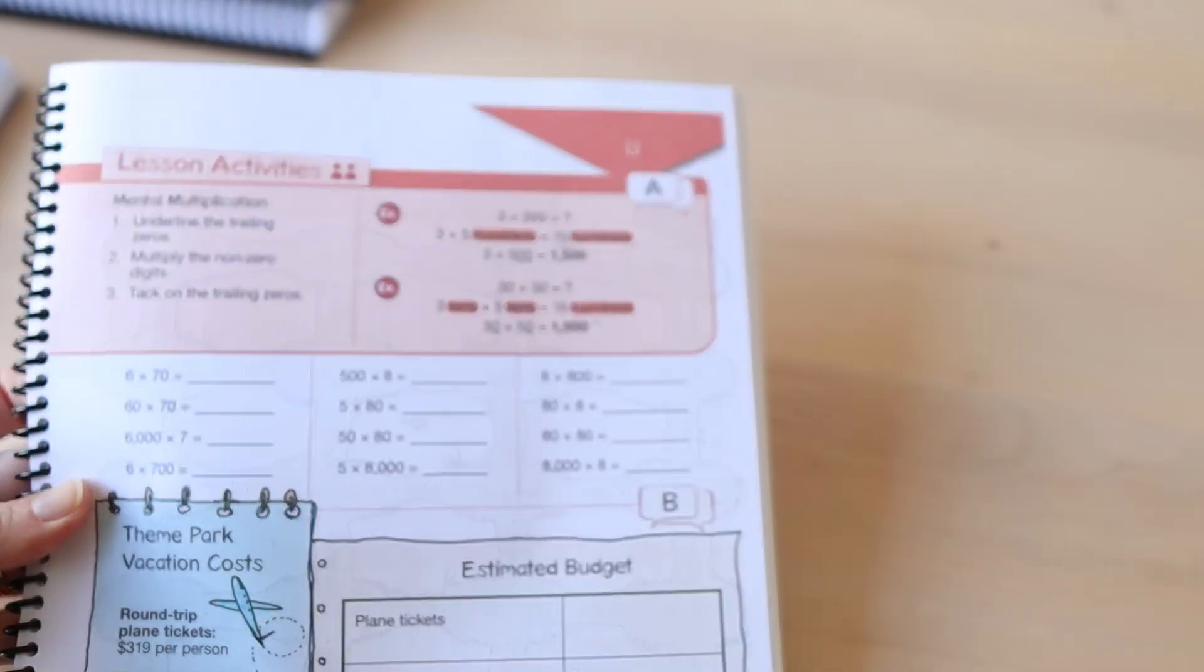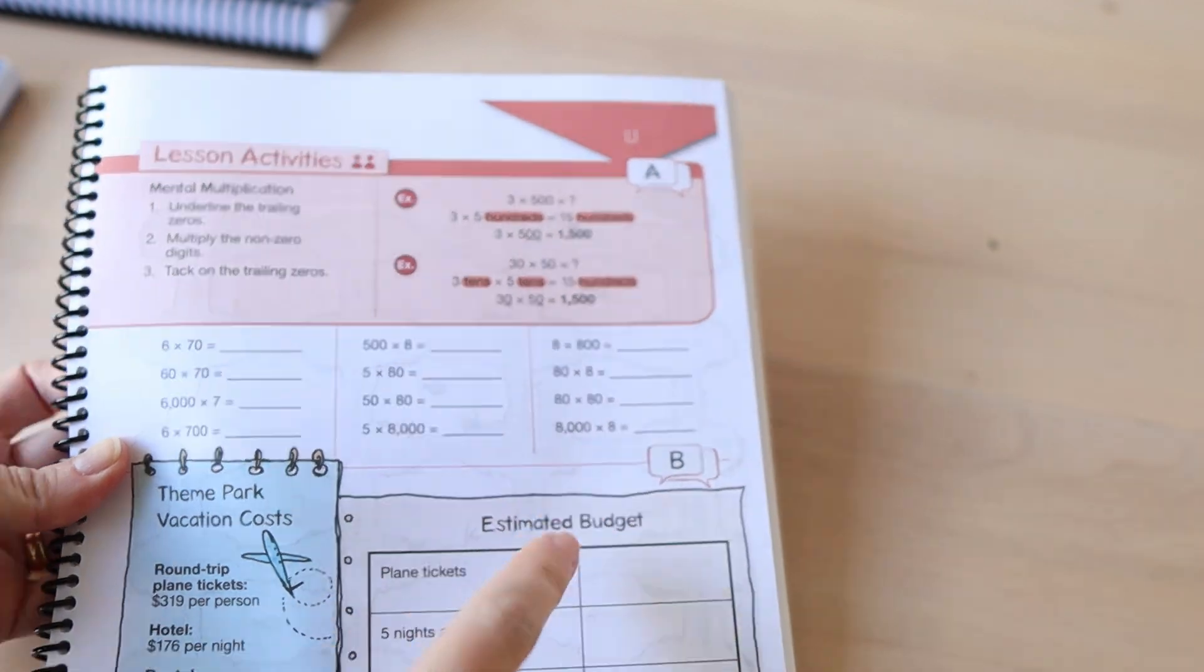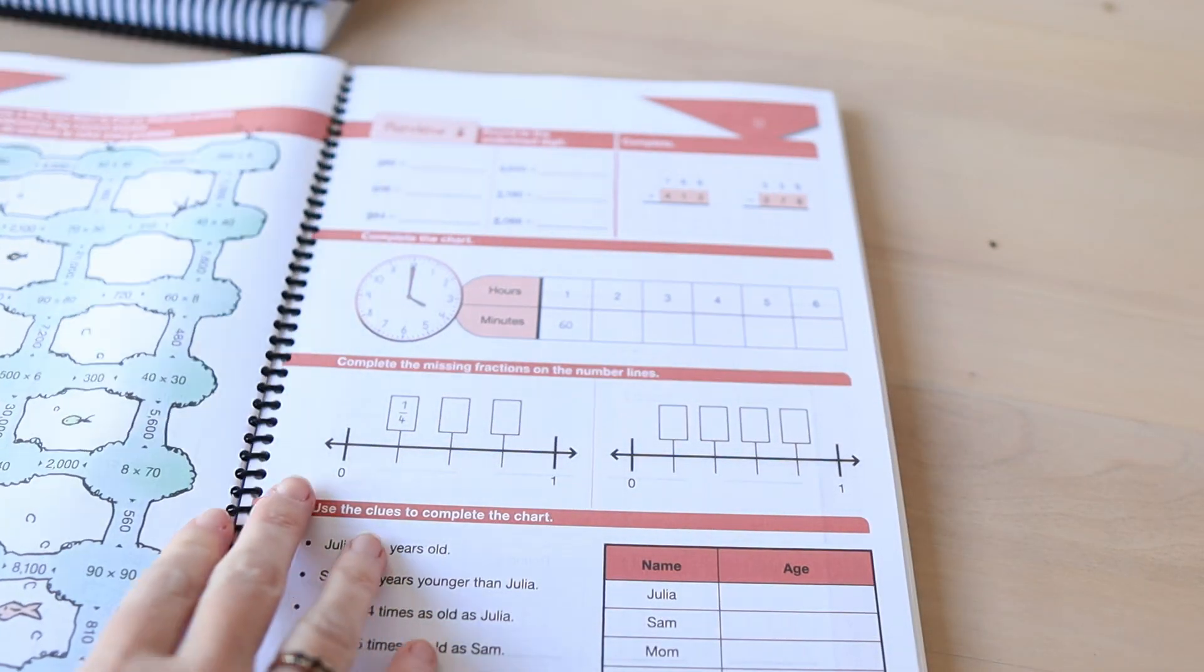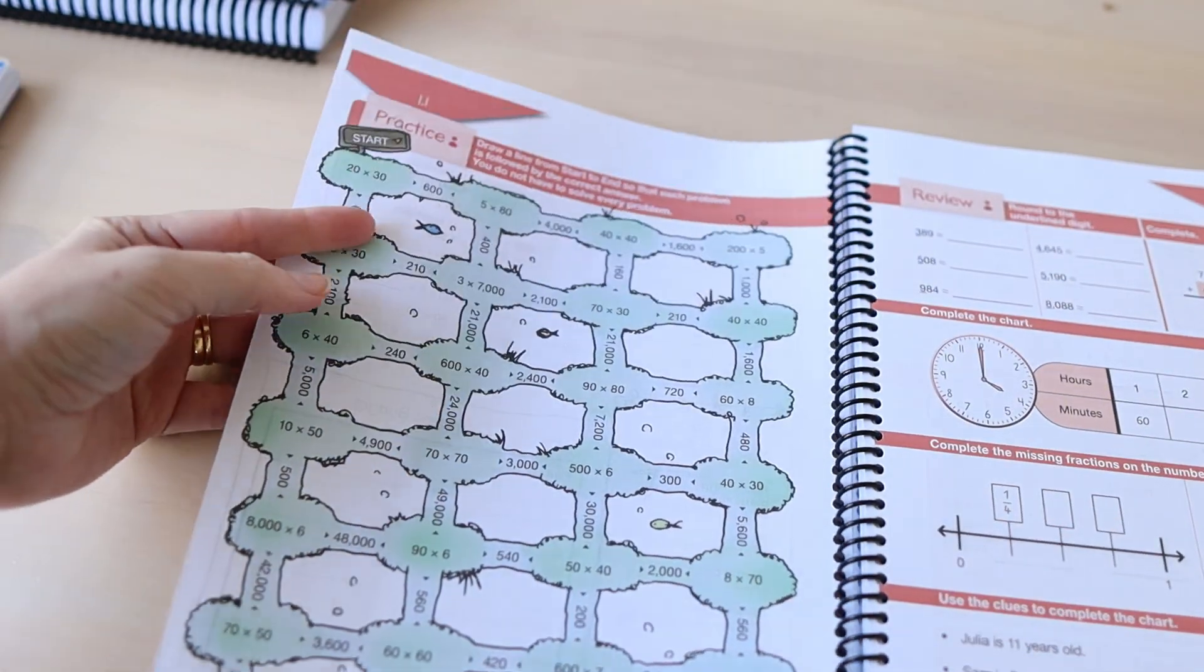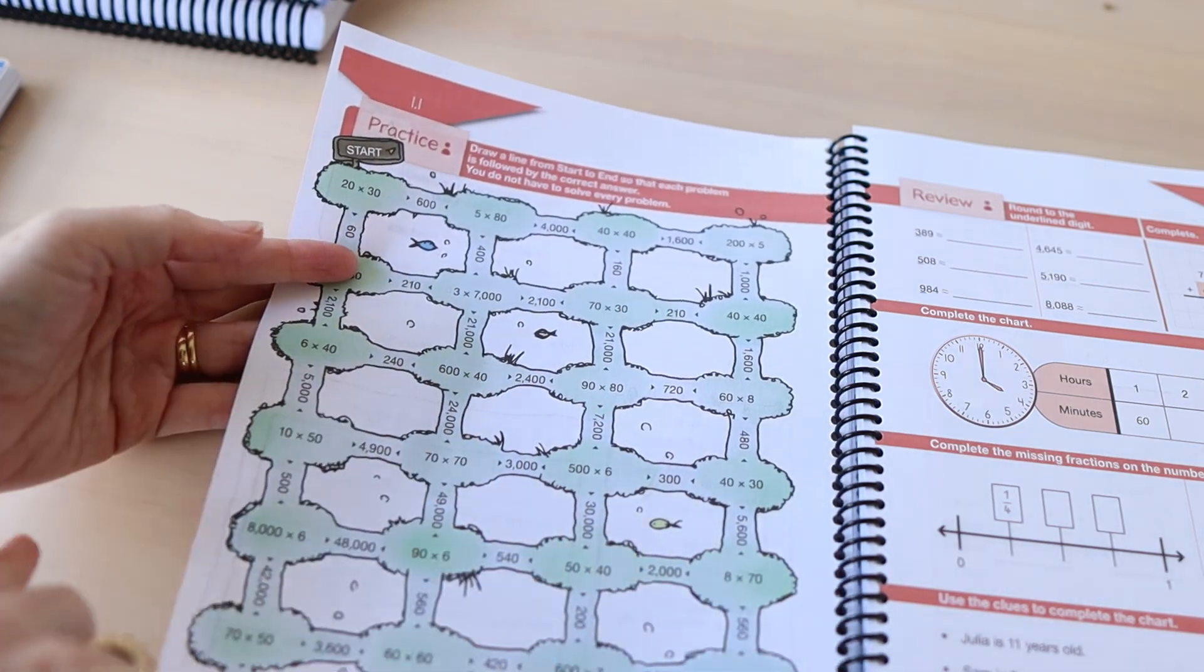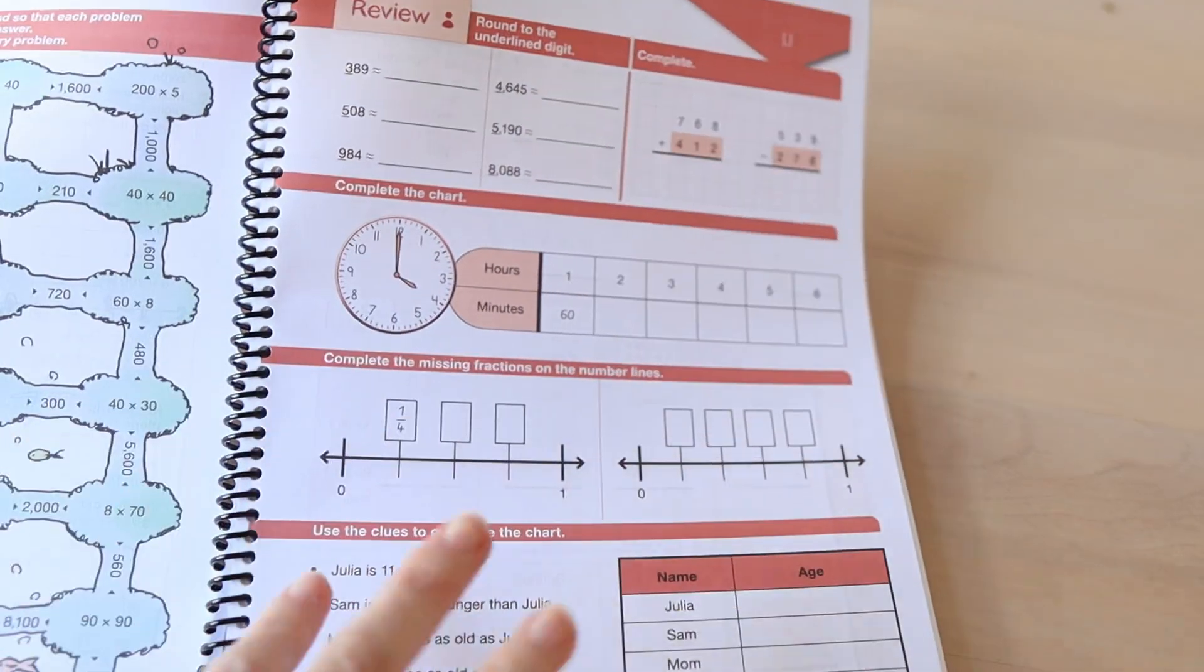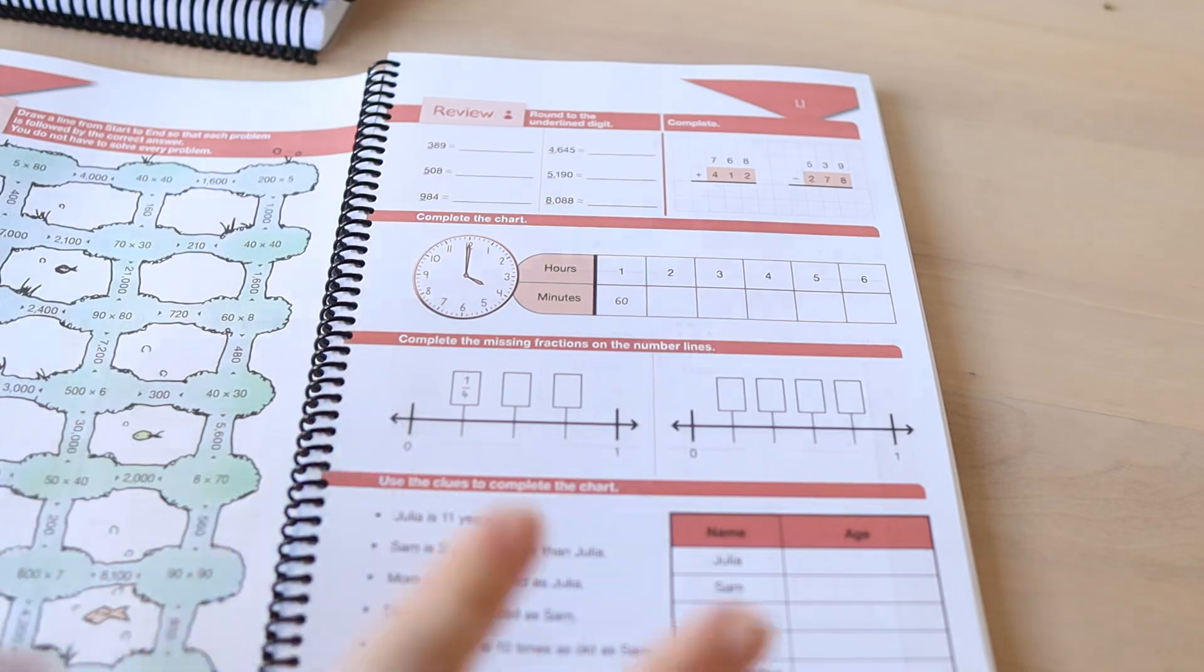This is the page that you go through with your child as you're teaching the lesson. You can see there's activity A at the top there which is also marked in the teacher's guide, and then activity B. So you're going through those different aspects with them. And then this is the practice page that is based on the lesson that they just did. And then this is the review page which practices skills that they have previously learned.